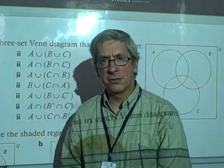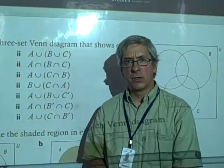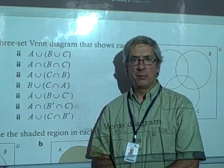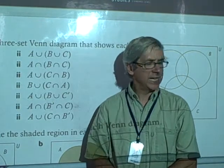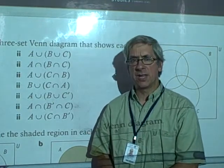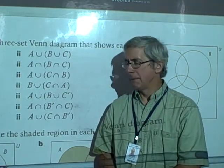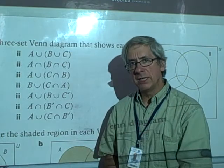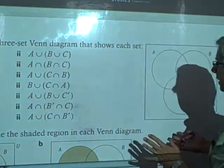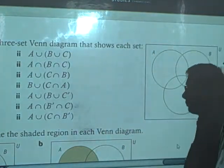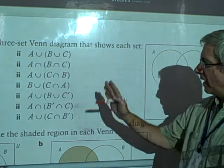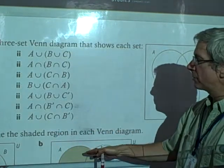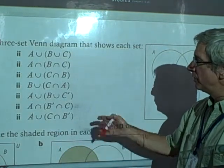Welcome to this video. This is discussing homework problems in section 8F, page 382 in the section in set theory, and it deals with the three set Venn diagrams. This is problem number one. I'll leave Roman numeral one for you to do, and I'll demonstrate Roman numeral two for these.